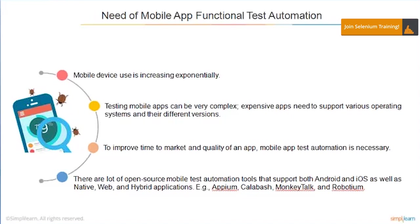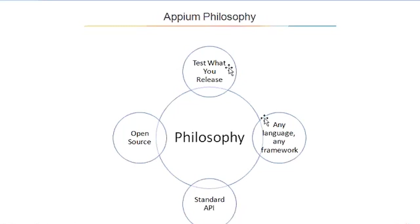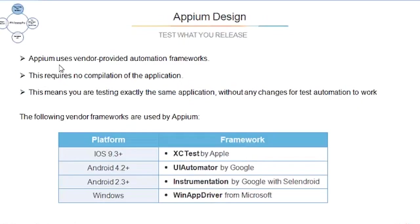That's why Appium is ahead compared to other tools. Appium is a cross-platform solution — you can write tests for Android, Windows, and iOS. There is no dependency on mobile device OS. It supports multiple languages and allows execution on actual devices and simulators. Appium uses vendor-provided automation frameworks: UI Automator by Google, XCTest by Apple, and Windows App Driver by Microsoft.